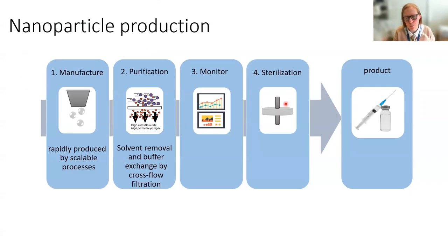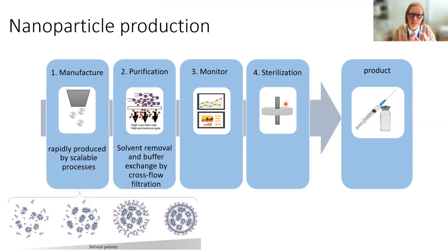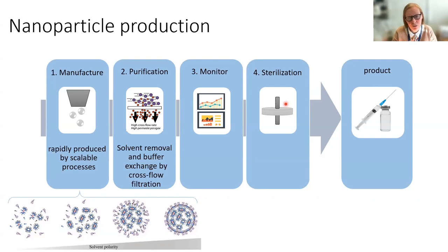Just to give you an overview — the process we adopt is manufacturing using microfluidic processes, where we're basically doing solvent dilution, which causes nanoprecipitation and formation of lipid nanoparticles. We then do purification to remove the solvent, either by cross-flow filtration, or if we're in a hurry, a spin column. We then monitor all the CQAs that we're used to, and apply sterilization before we have our product.